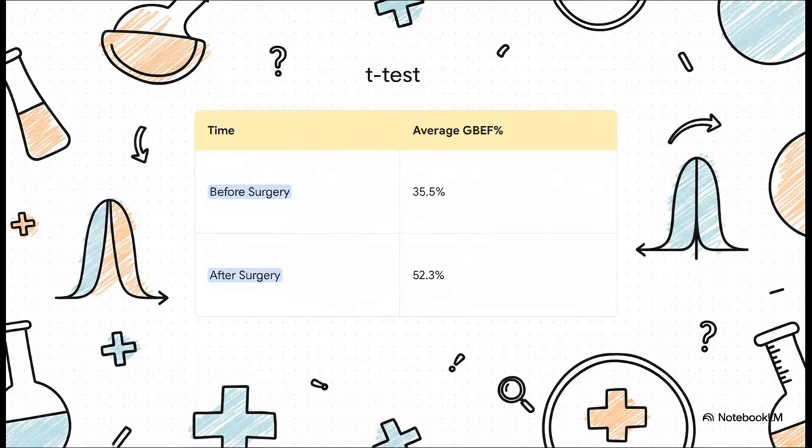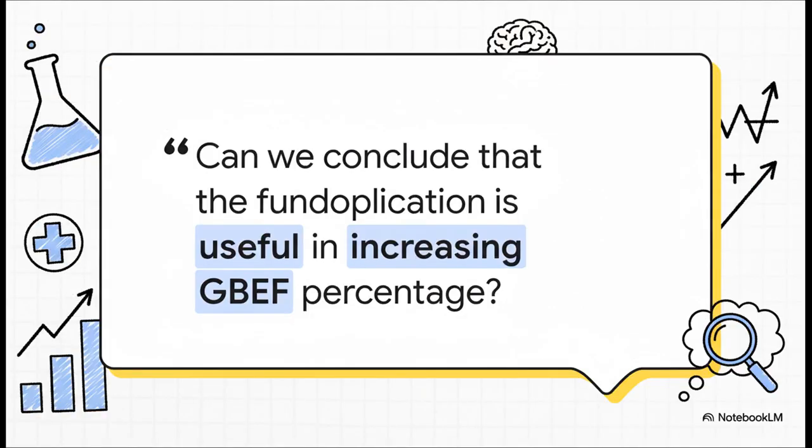So in this study, surgeons wanted to know if a particular procedure was effective. They measured something called the GBEF percentage. It's basically a measure of how well the gallbladder is working. They took measurements before the surgery and then again after. And look at that. On average, the GBEF percentage jumped from 35.5% all the way up to 52.3%. That's a huge increase. The paired T-test answers this exact question by looking at the change within each individual patient. By analyzing these paired differences, it provides really strong evidence about whether the surgery itself was the cause of this dramatic improvement.